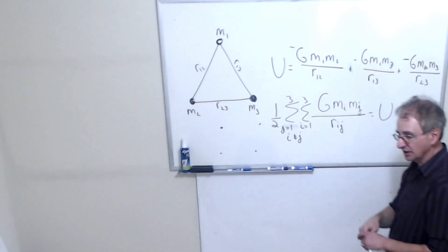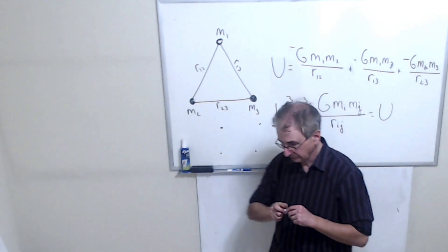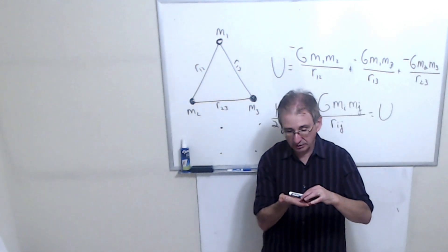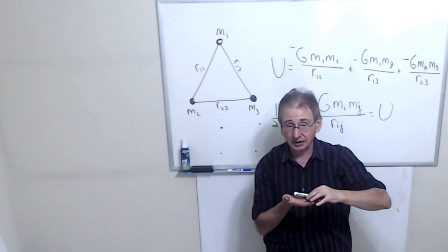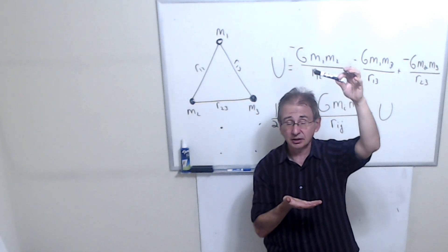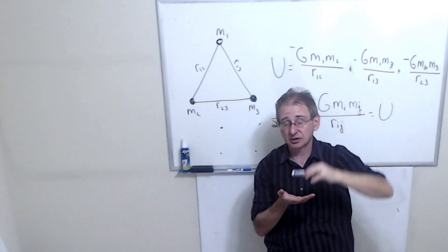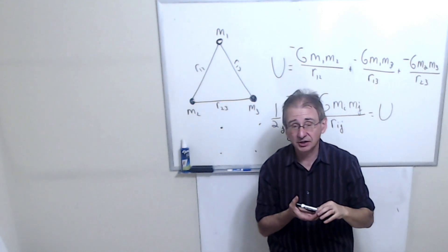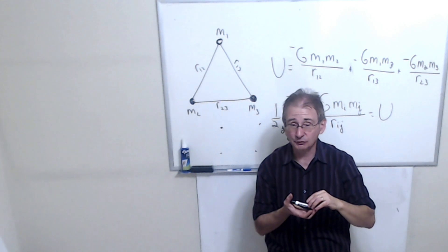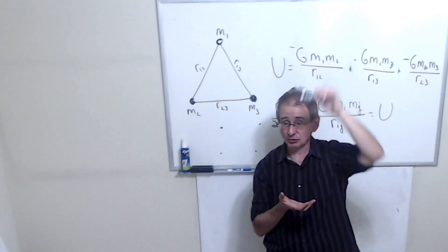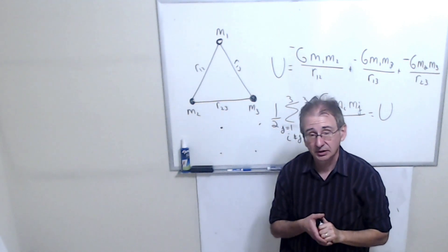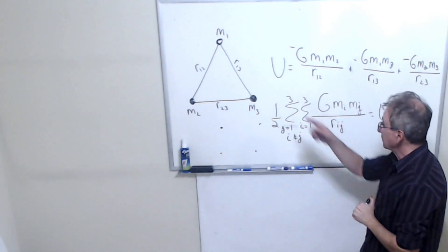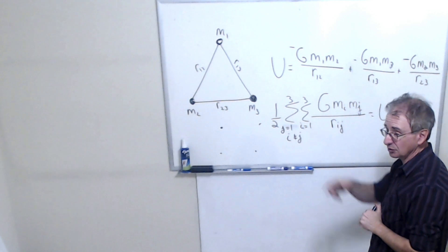I'll give you an analogy. If I raise this marker from here to here, if I raise it a distance H, I've increased the potential energy by MGH. Where did that energy come from? It came from me. I gave the amount of work equal to MGH to raise the potential energy of the system. So the amount of work that I do to assemble the system of particles is the energy stored in the system.